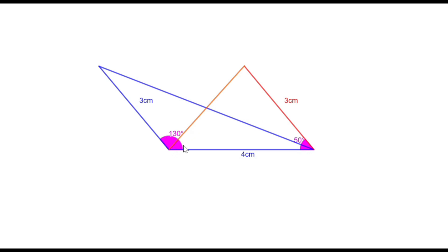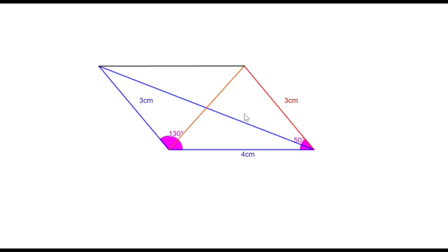Now look at these angles: this is 130 degrees and this is 50 degrees. Their sum is 180, which means they are a pair of co-interior angles. Therefore, these two lines are parallel and their lengths are the same. Therefore, when you join a line like this, it is parallel to the base line. Now look at the two triangles — they have the same base and the third vertices are on a line parallel to the base, so they have equal area.